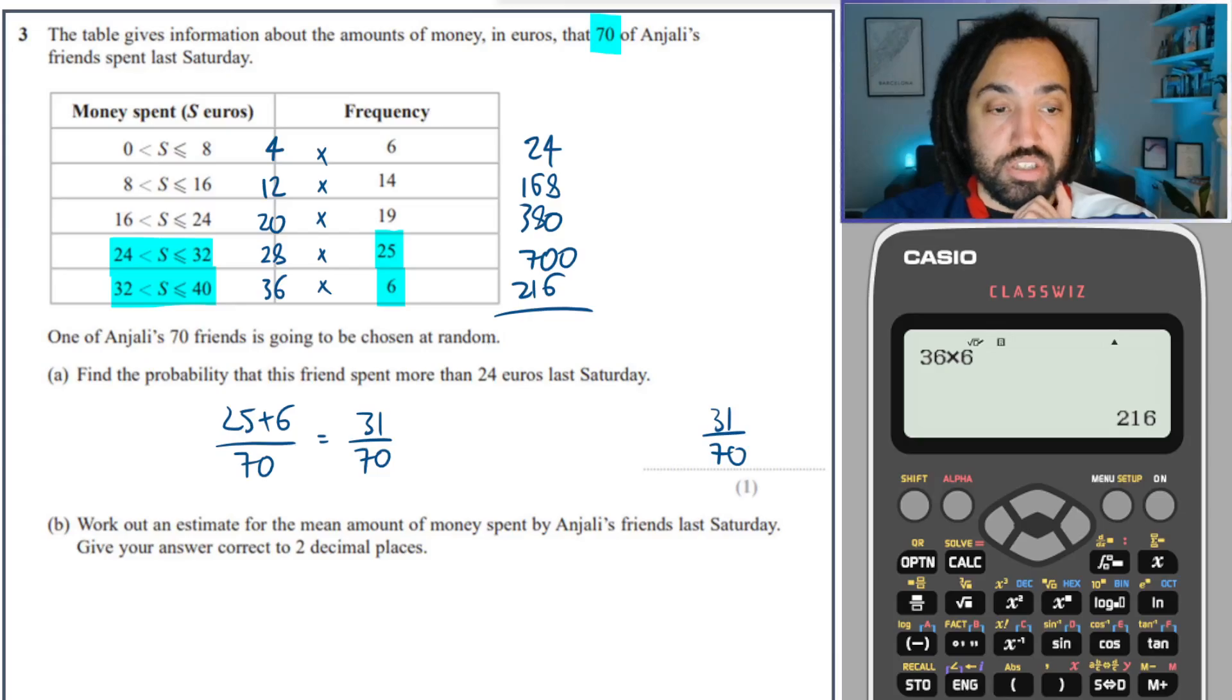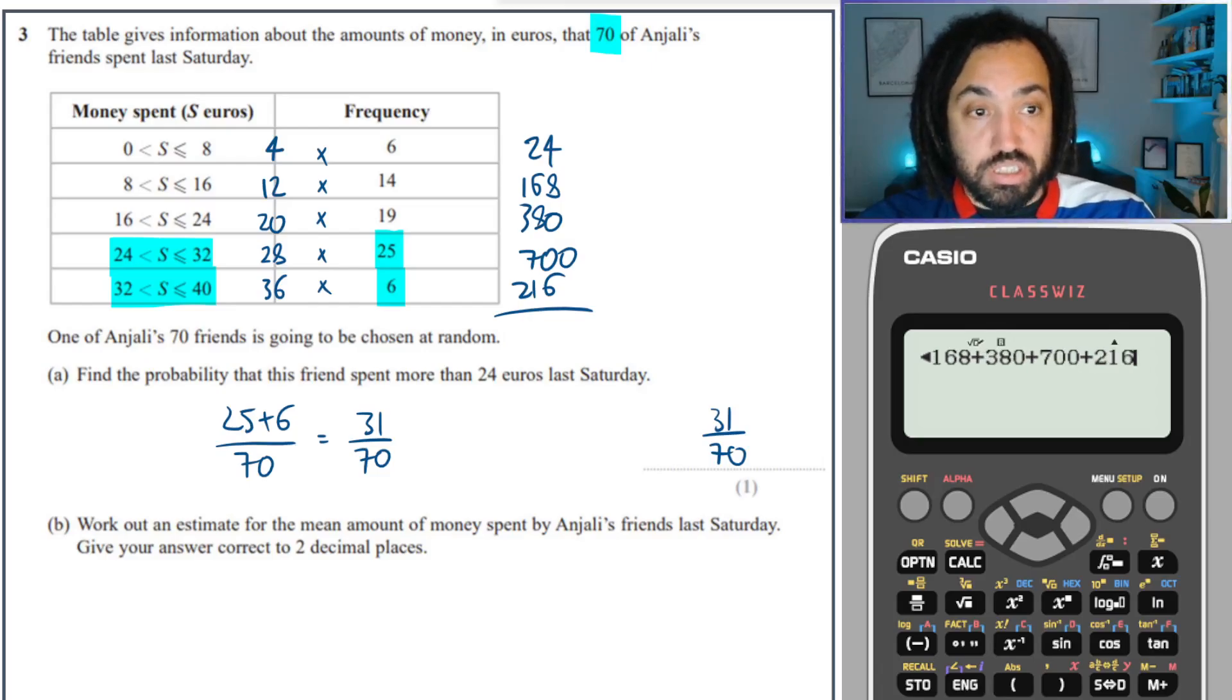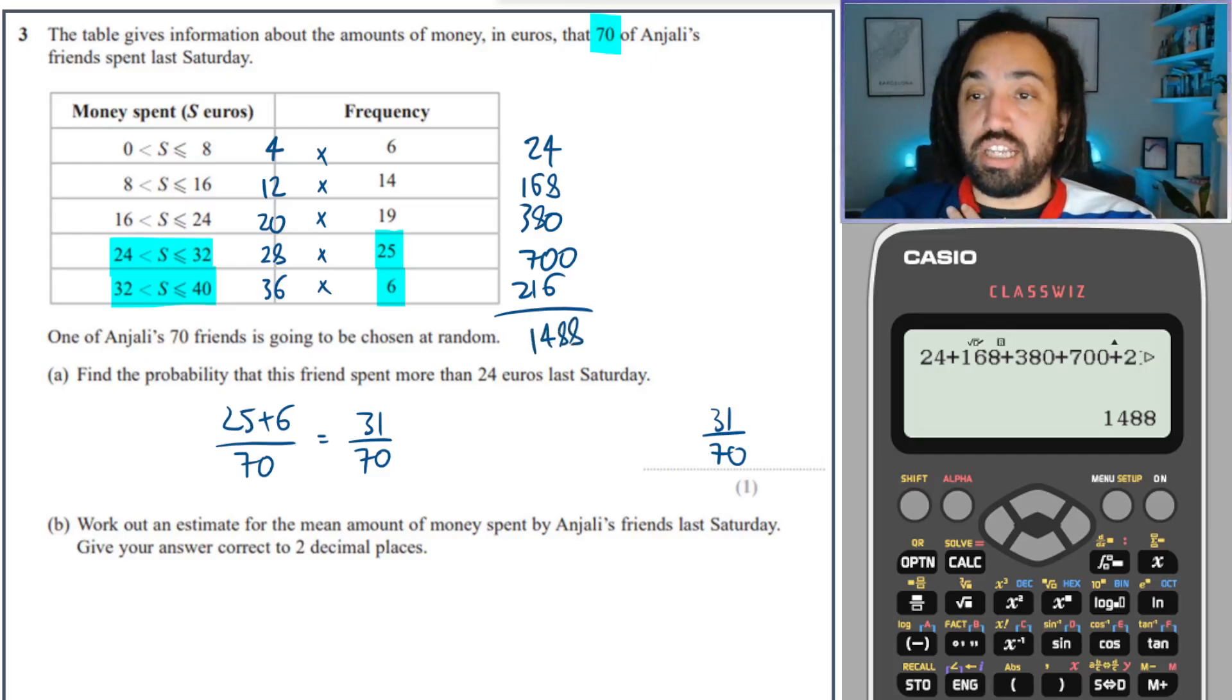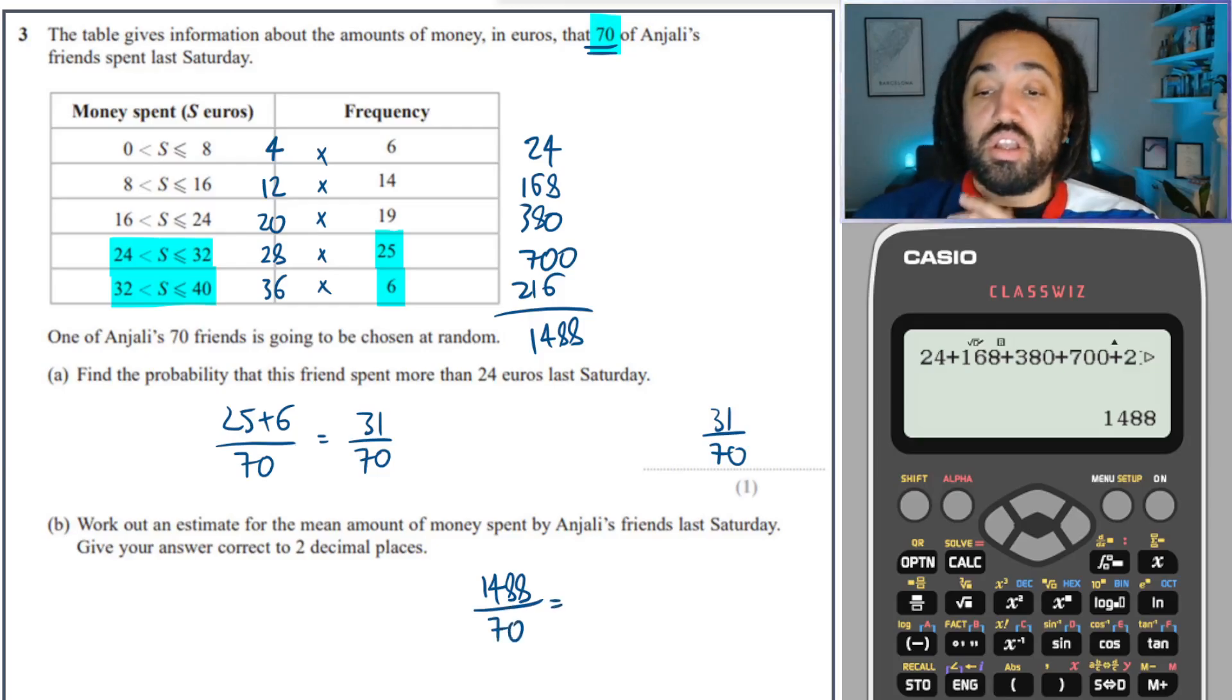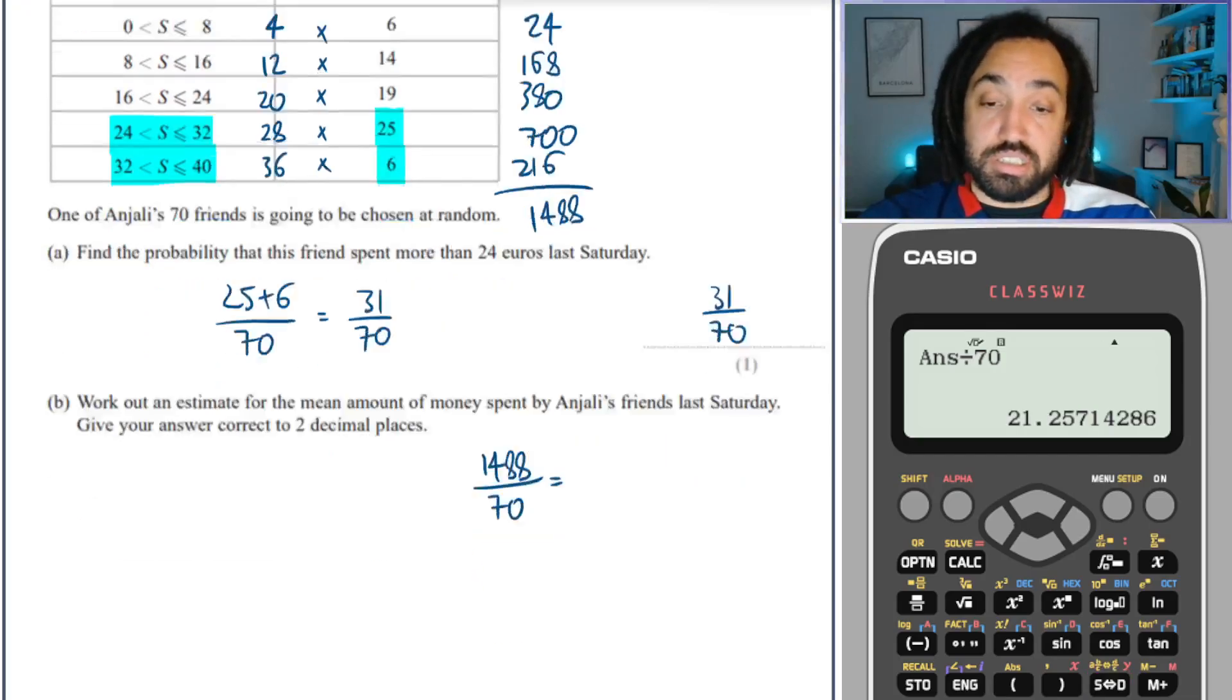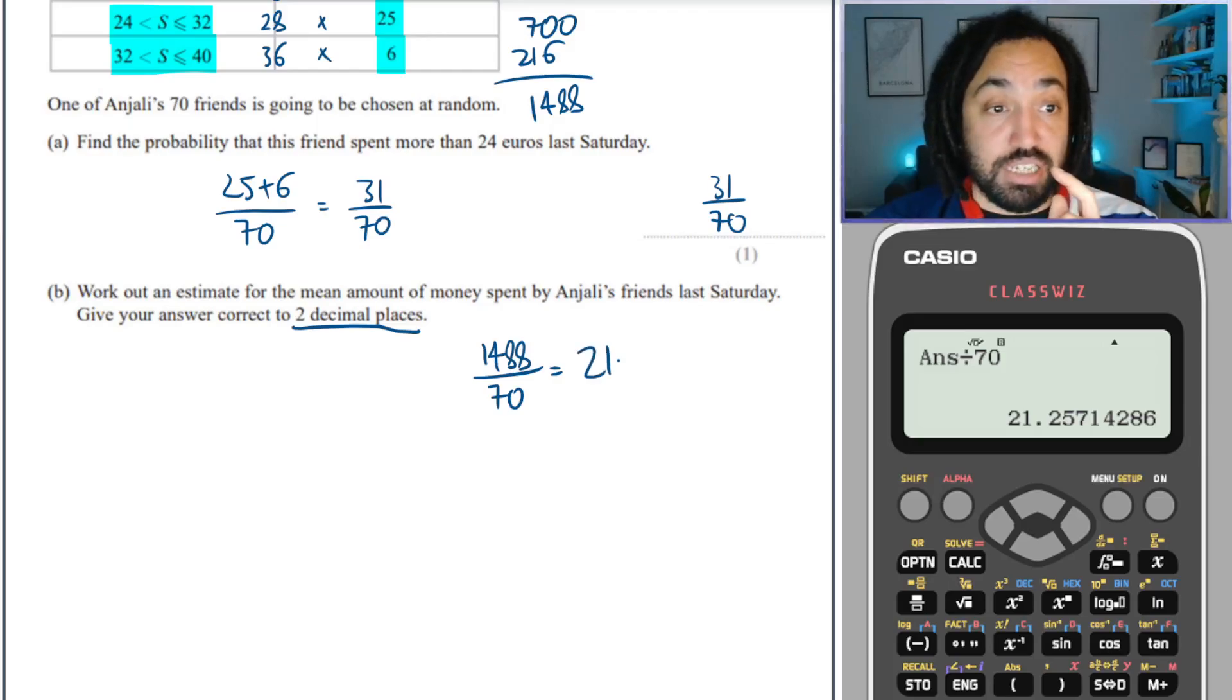We add up this column to find the total amount of money. So what we do is type 24 plus 168 plus 380 plus 700 plus 216, and that gives us 1488. Luckily we already have the frequency so we don't need to add up the frequency column. To find the mean we just do 1488 divided by 70. That gives us, well I can tell it's not exact because it says give your answer to two decimal places. So it is 21.26.